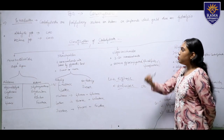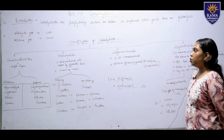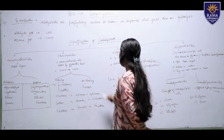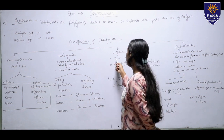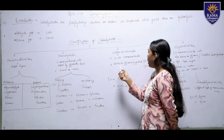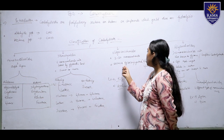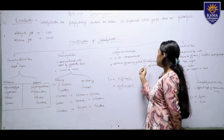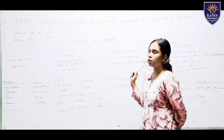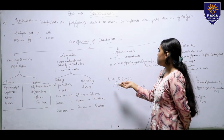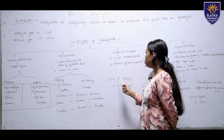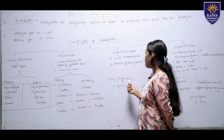Now, oligosaccharides. Oligosaccharides have three to ten monosaccharide units and also occur as glycoconjugates, that is glycolipids and glycoproteins. Some examples of oligosaccharides are raffinose and verbascose.